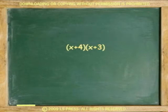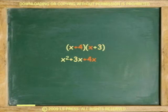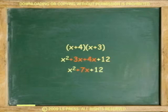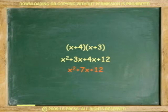Let's try this example. Following FOIL — first terms: x times x equals x squared. Outside terms: x times 3 equals 3x. Inside terms: 4 times x equals 4x. Last terms: 4 times 3 equals 12. Combine like terms: 3x plus 4x. Answer: x squared plus 7x plus 12.